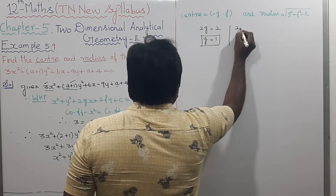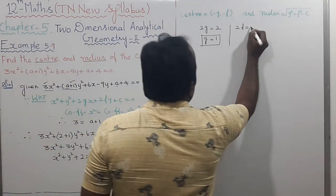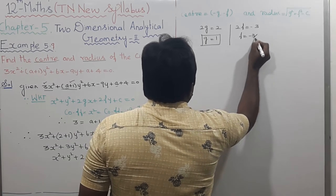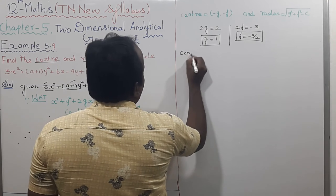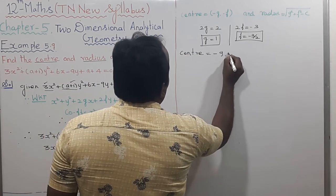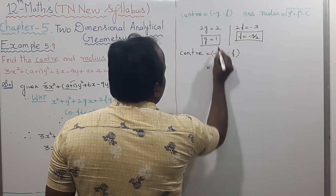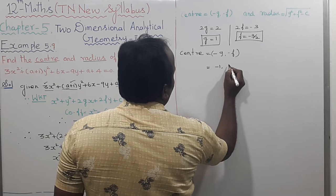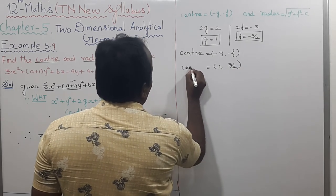Next, find f. The coefficient of y: 2f = -3, so f = -3/2. Therefore the center is equal to (-g, -f) = (-1, 3/2). That is the center value.